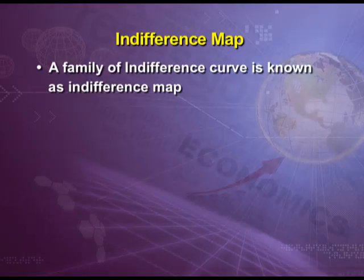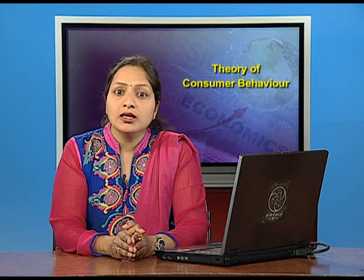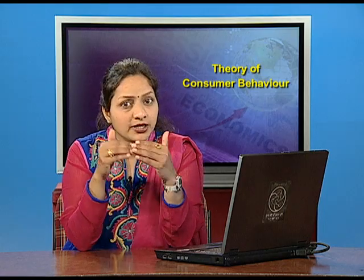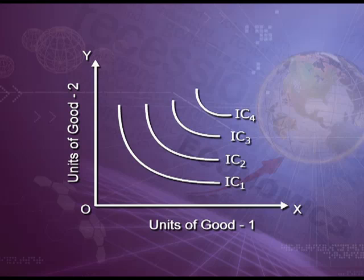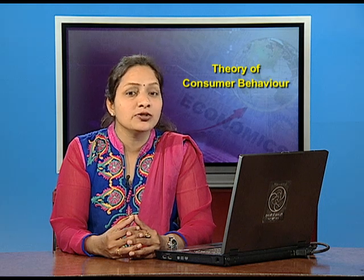Now, the indifference map. A family of indifference curves is known as an indifference map. Each curve on the right-hand side represents a higher level of satisfaction as it represents greater quantities of both goods. An indifference curve represents preferences of a consumer and indicates his taste for the two commodities. Indifference curves are numbered in ascending order: indifference curve 1, 2, 3, and 4. Indifference curve 2 is superior to IC 1, IC 3 is superior to IC 2, and IC 4 is superior to IC 3. In short, the higher the position of an IC, the higher will be the level of satisfaction. Each indifference curve shows a different level of satisfaction.